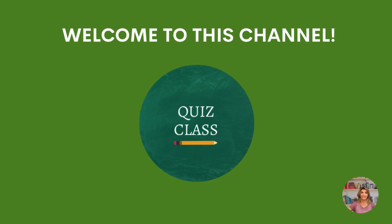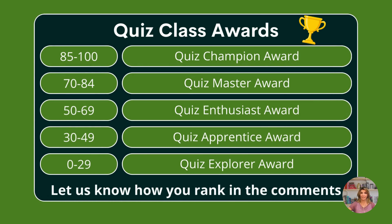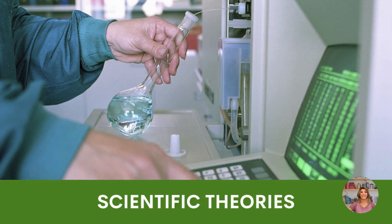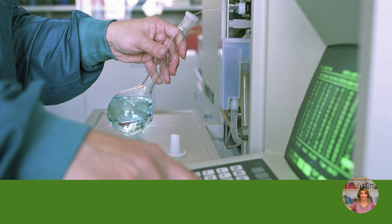Hello and welcome to quiz class. Today we have 100 questions on general knowledge and today's course is a difficult one. Let's take a look at our quiz class awards. Our categories for today are: Scientific Theories, Philosophical Theories, Economic Theories, and Political and Psychological Theories.